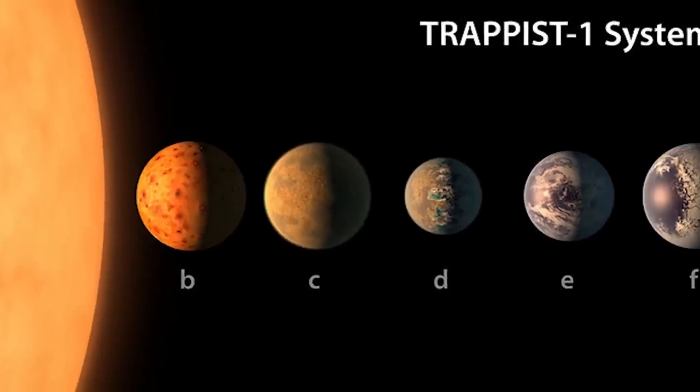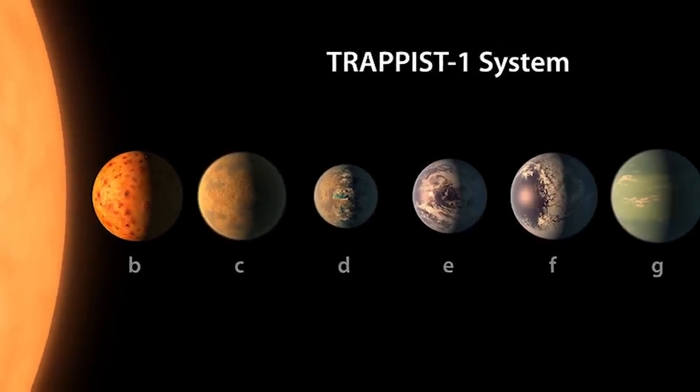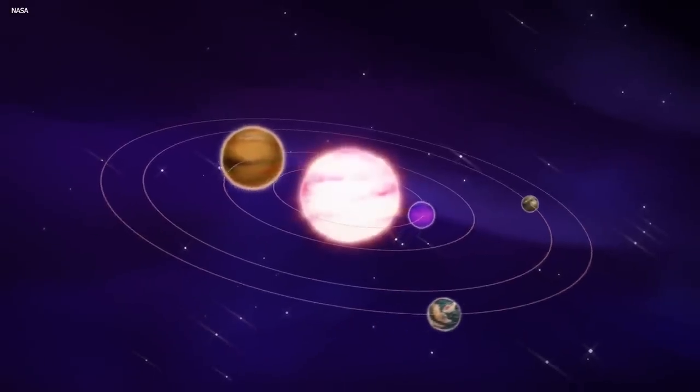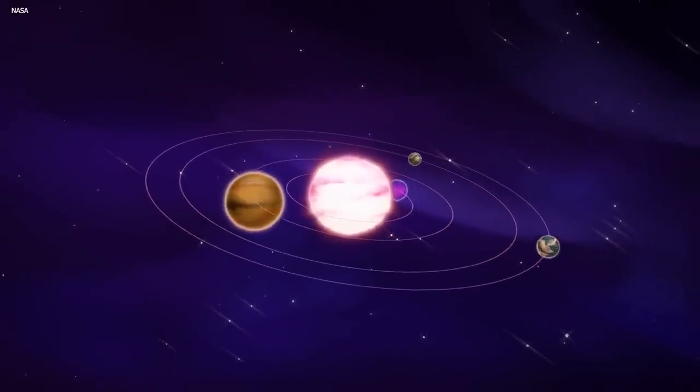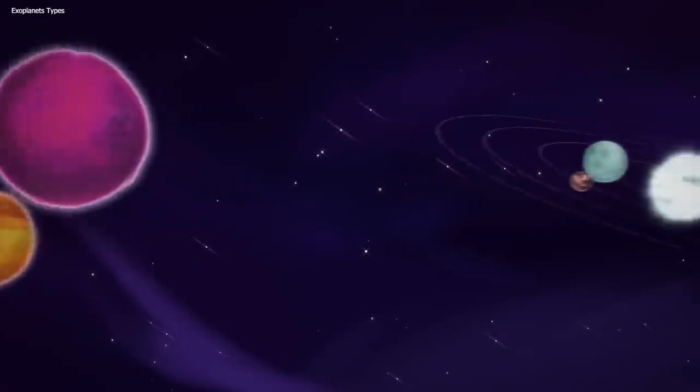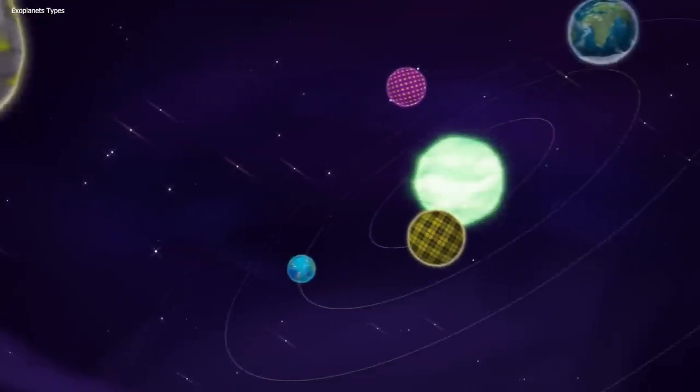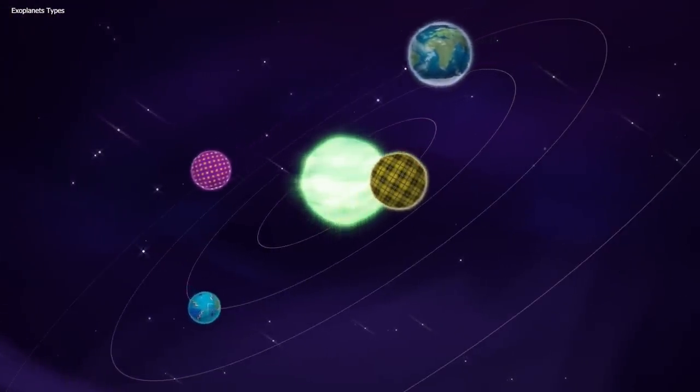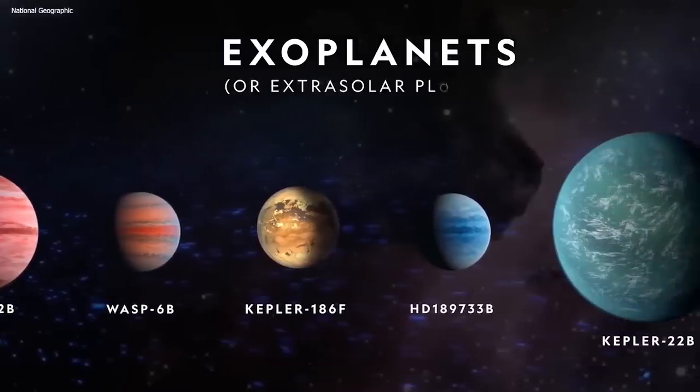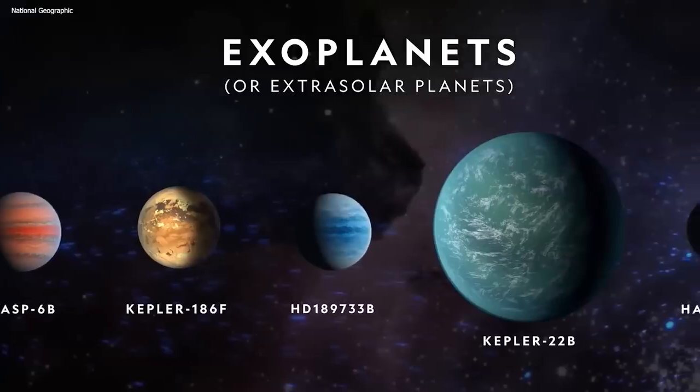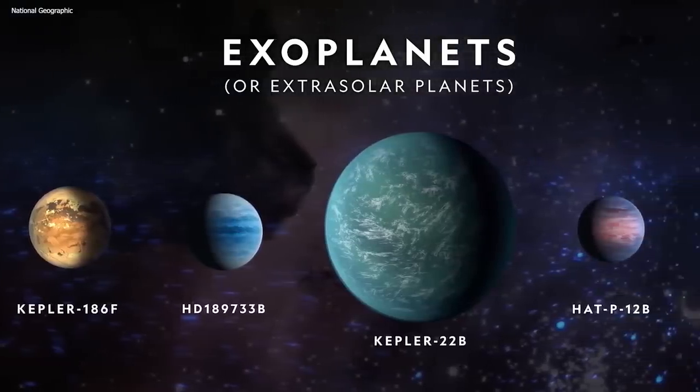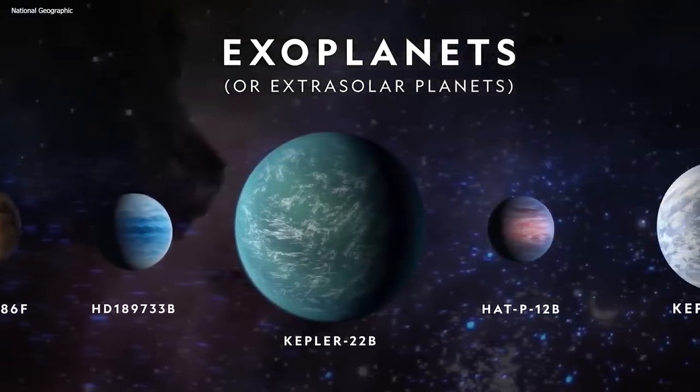The discovery of TRAPPIST-1b, along with its six sister planets, was nothing short of a revelation in the field of exoplanet research. It showed that rocky planets could form around very low-mass stars, which are the most common types of stars in our galaxy. This opened up new possibilities for studying the diversity and evolution of planetary systems, as well as potential signs of life on other worlds.